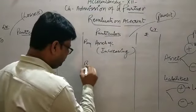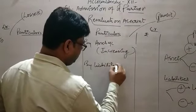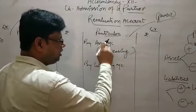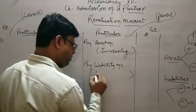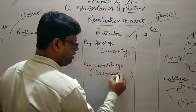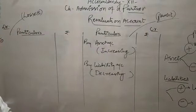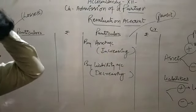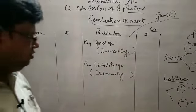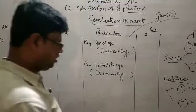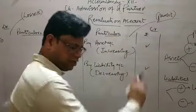As for liability — if liability decreases, that is a benefit. For example, our creditors were 20,000. If they settle for 19,000, the benefit is 1,000. That benefit goes on the credit side.